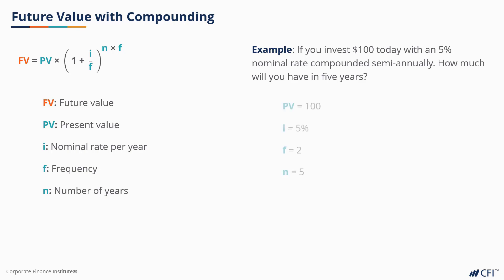PV in this case is 100. The nominal interest rate per year, i, is 5%. The frequency of interest payments per year is 2, denoting semi-annual compounding. And the number of years, N, is 5. Plugging in the variables and solving for FV, we get an answer of $128.01.